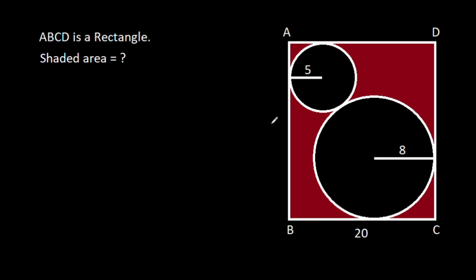In this video, we have been given two circles of radius 5 and 8 inside a rectangle, and BC is 20. We have to find the shaded area.